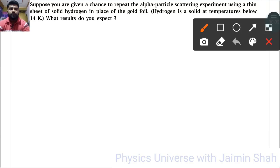Suppose you are given a chance to repeat the alpha particle scattering experiment using a thin sheet of solid hydrogen in place of the gold foil. Hydrogen is a solid at temperature below 14 Kelvin.